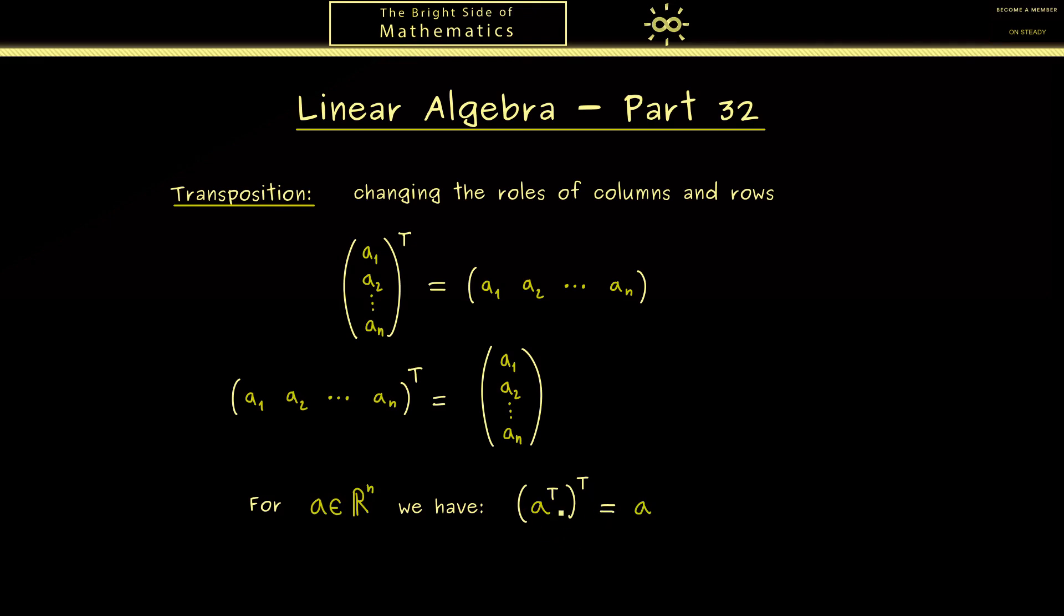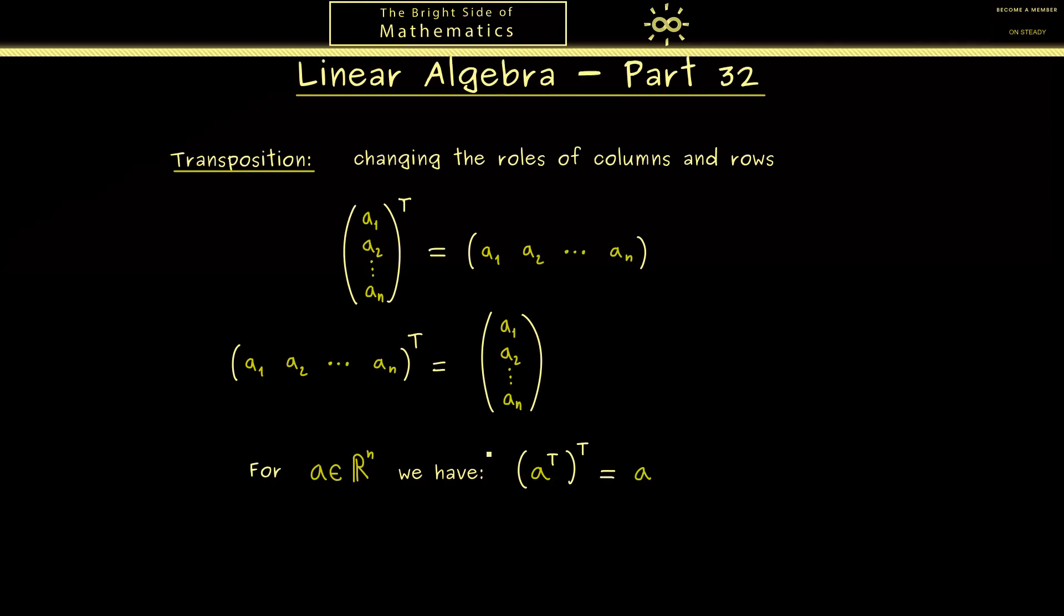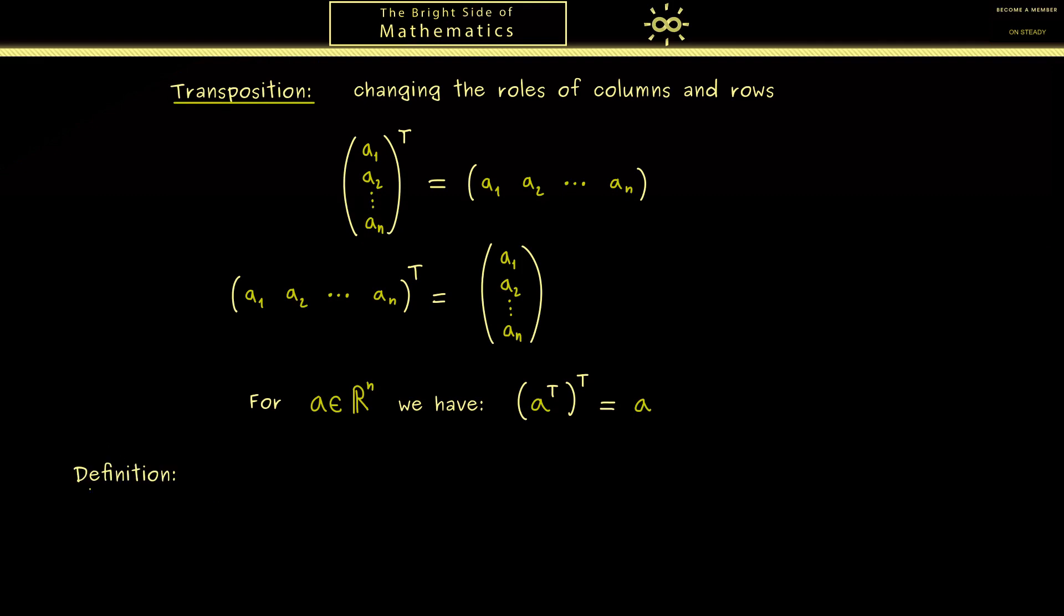Okay, then in the next step let's write down the definition for matrices. So we know a matrix is just a table of numbers with rows and columns and now the transposition should change the rows and the columns. Therefore here let's fix a matrix A with m rows and n columns. So we have m times n. And then we are able to define a new matrix A transpose, which now should be an element of R to the power n times m. So you see we already exchanged rows and columns. And now the common name for A transpose is just transpose of A.